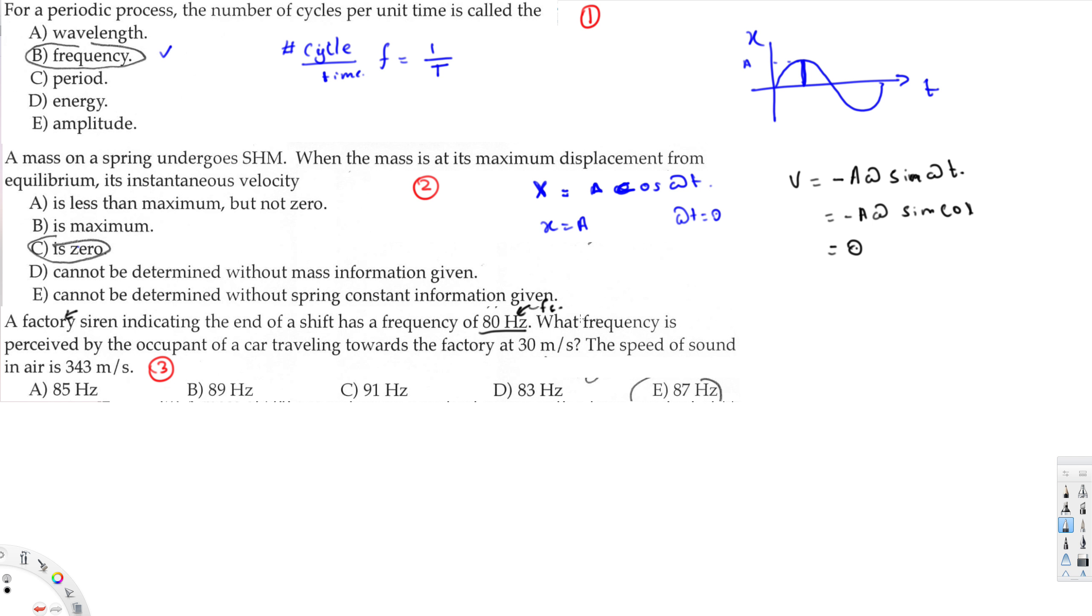What frequency is perceived by the occupant of a car traveling towards the factory at 30 meters per second? So the question is asking what is the frequency observed by the person. The observer is traveling with the velocity of 30 meters per second, so we can say V_O. The speed of sound in air is 343 meters per second. Now we can use the Doppler effect equation.